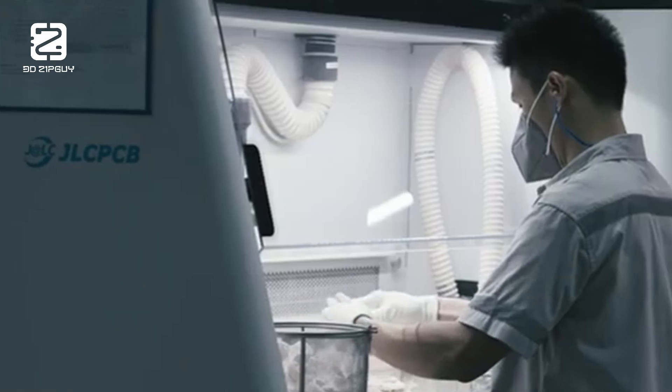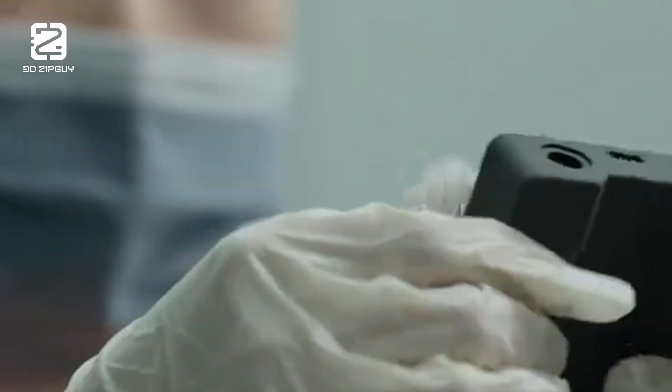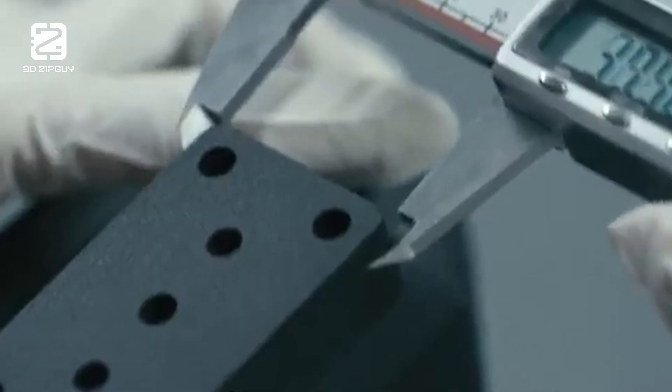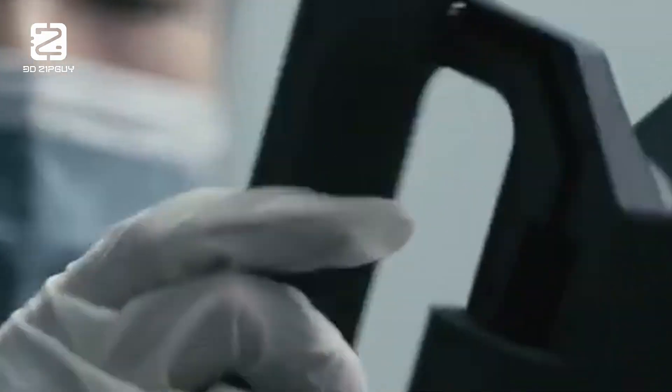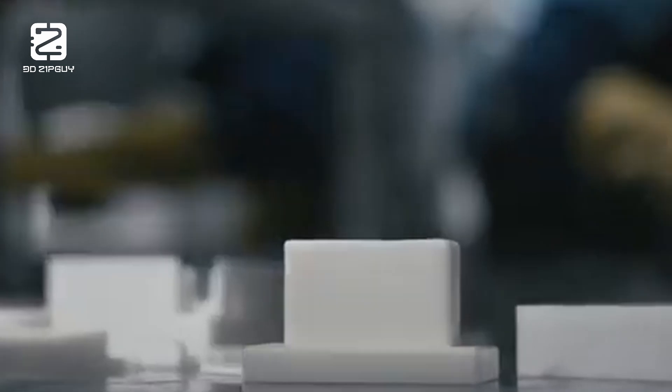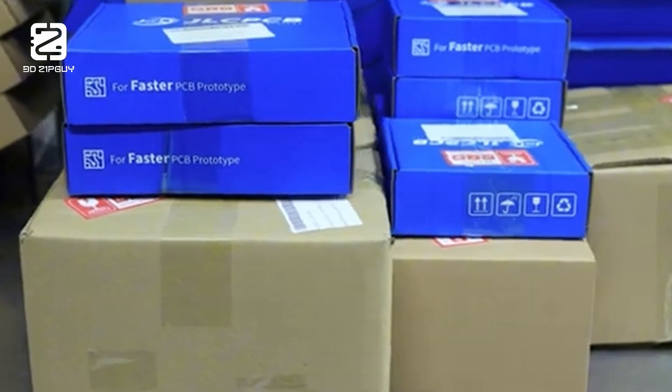JLC3DP is a leading online 3D printing service specializing in rapid prototyping and low-volume production. They use high-end 3D printers to make custom parts from different materials like plastic, resin, and even metal. You just upload your design, get a quote, and they print and ship it, often within a few days. Super convenient if you need small batches of custom parts without much hassle.